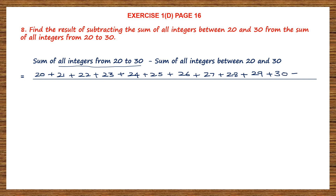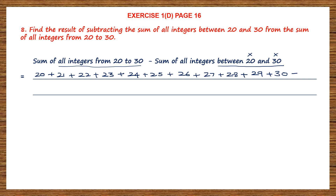Now we are going to subtract the sum of all integers between 20 and 30. When we use the word 'between', we do not include 20 and 30. So let's write down all the other numbers in brackets: 21, 22, 23, 24, 25, 26, 27, 28, and 29. We are not going to write 30.